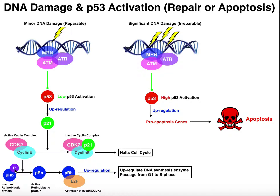If we want the cell to divide and replicate its DNA, then retinoblastoma protein should have the phosphate removed and become active. When it becomes active, it will complex with another protein called E2F and becomes an activator of cyclins and CDKs — cyclin-dependent protein kinases. This complex will promote the cell's progression to the next phase of the cell cycle, in this case G1 to the S phase, where the DNA gets replicated. We're okay with the DNA being replicated when there's no DNA damage, because there's no damage and no mutation.